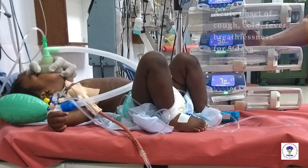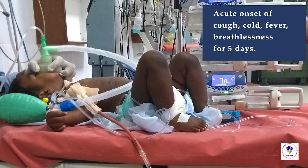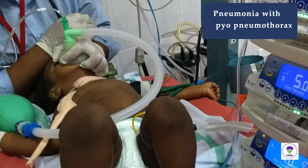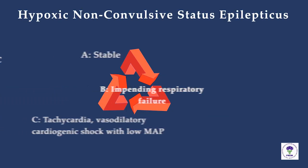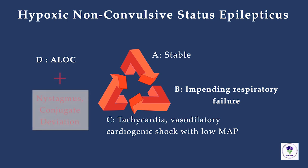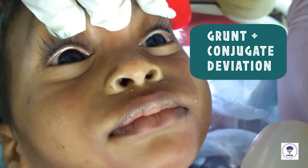This two-year-old boy presented with acute onset of cough, cold, fever, and breathlessness for five days. The etiology: pneumonia with right-sided pyopneumothorax. His assessment showed stable airway, impending respiratory failure, tachycardia, vasodilatory cardiogenic shock with low MAP, altered level of consciousness, and signs of hypoxic non-convulsive status epilepticus. Note the grunt and persistent conjugate deviation.